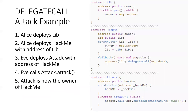Here's an example of an attack. We've got three contracts. We've got the developer who is creating the vulnerable contract — we'll call this the hack me contract. He's also created a library that he's using. And then we've got our attacker, who is creating the attack contract.